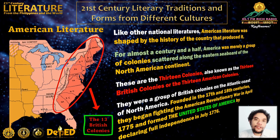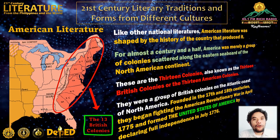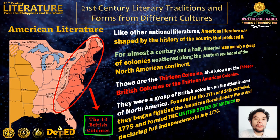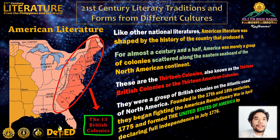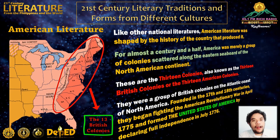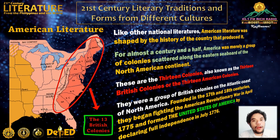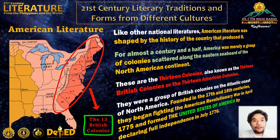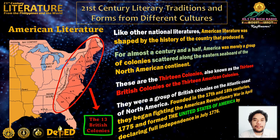Like other national literatures, American literature was shaped by the history of the country that produced it. For almost a century and a half, America was merely a group of colonies scattered along the eastern seaboard of the North American continent — the 13 British colonies on the Atlantic coast, founded in the 17th and 18th centuries. They began fighting the American Revolutionary War in April 1775 and declared full independence in July 1776.